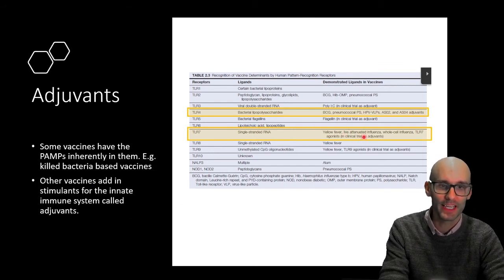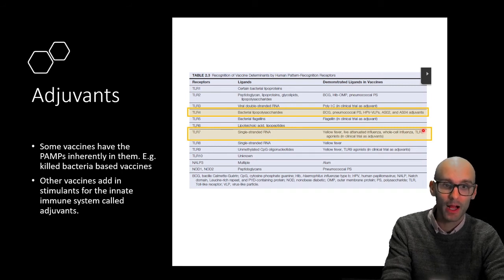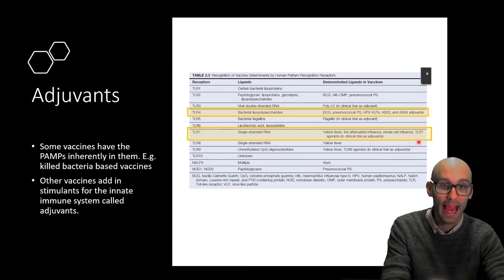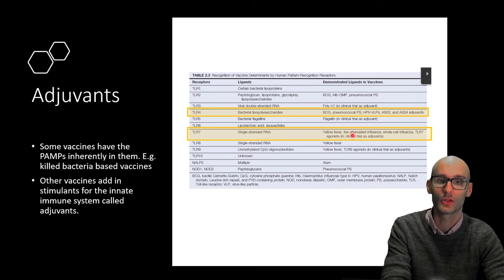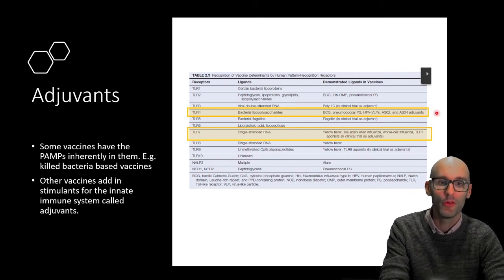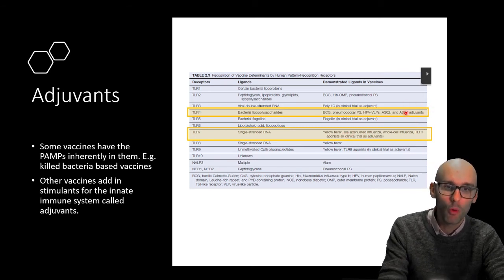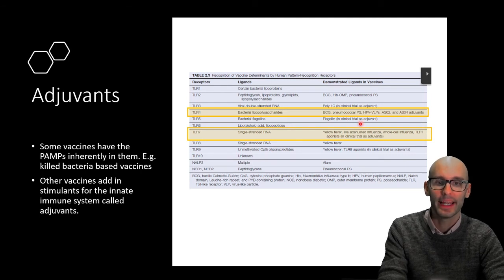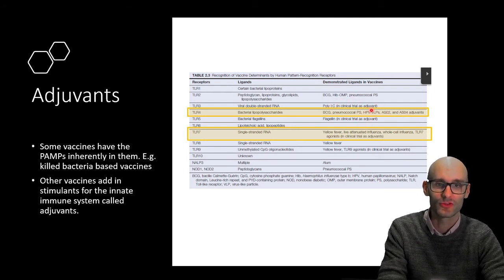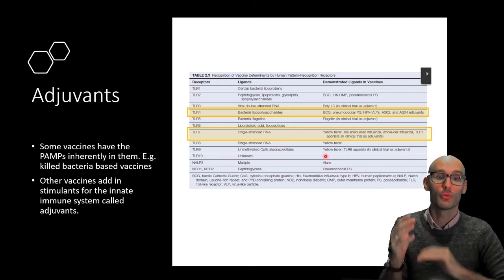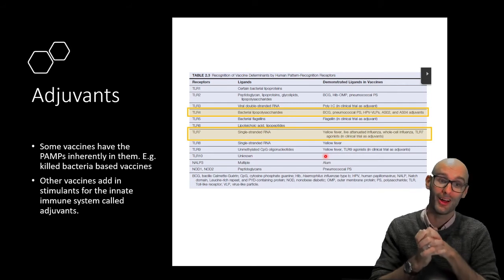So we've just got some examples there. There are TLR7 agonists, for example, that are currently in clinical trials, adjuvants. Over here, there are TLR4 adjuvants that are going in, or poly-IC as a clinical trial for adjuvants, or alum, which is an aluminum crystal that will poke holes in cells and cause IL-1 release. So there are these other stimulants that go into the vaccine to stimulate that innate immune response.